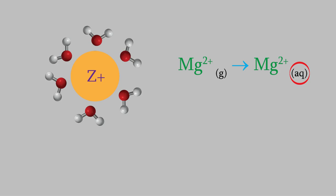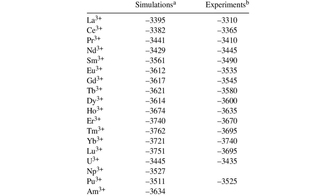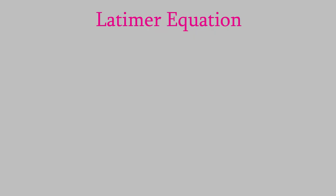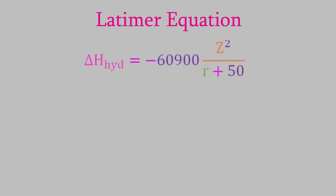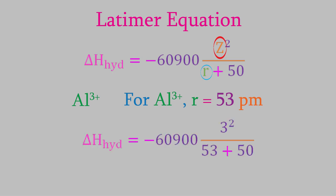Sometimes we can look up this enthalpy in a reference book. But what if we can't? There are many ions whose enthalpies of hydration haven't been published. In that case, there's a good way to get a rough estimate of the enthalpy of hydration — it's called the Latimer equation. In this formula, Z is the charge on the cation and R is the radius of the cation in picometers, and the resulting enthalpy of hydration is in kilojoules per mole. For example, for an aluminum ion with a radius of 53 picometers, we plug the radius and charge into the Latimer equation, and we find that the enthalpy of hydration is approximately negative 5,321 kilojoules per mole.